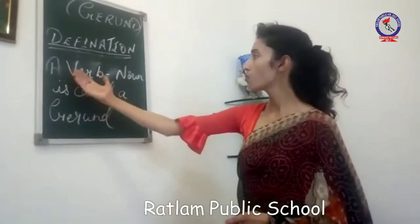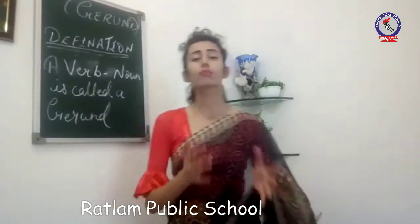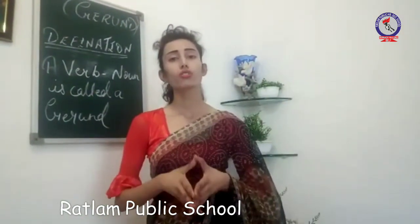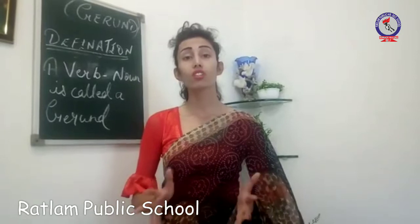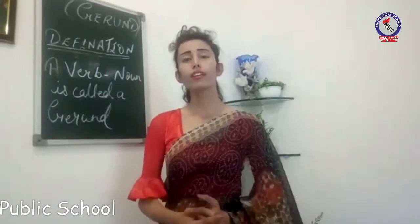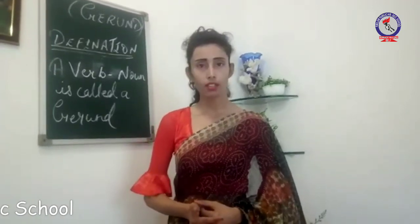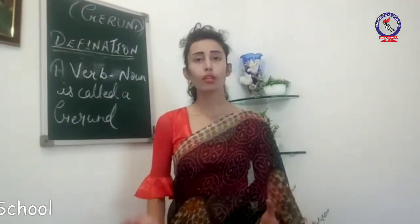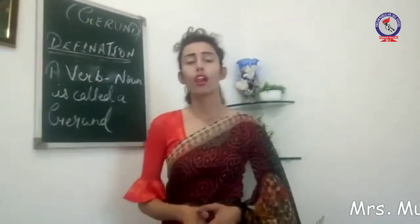Definition: A verb noun is called a Gerund. What is the meaning of a Gerund? What does it mean and where does it come from? A Gerund is related to the noun family. It comes out from a noun only. You can see that it is a continuous form of noun.